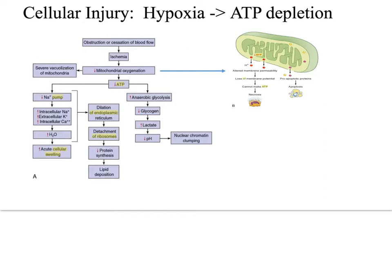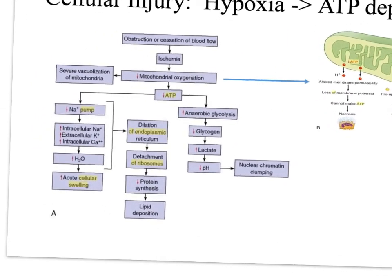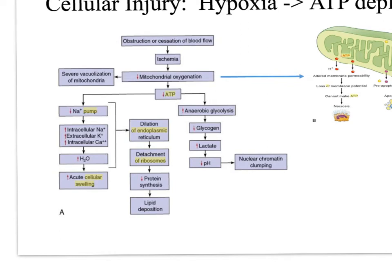Hypoxic injury is common, and the most common cause is ischemia. When ischemia occurs, there is a rapid decrease in mitochondrial phosphorylation, or oxygenation, which results in insufficient ATP production. When there's not enough ATP present to be used as a fuel source, the cells resort to anaerobic metabolism, also known as glycolysis. In glycolysis, glycogen is used as a fuel source to generate ATP, but it's pretty inefficient and produces byproducts of lactic acid, which accumulates in the cells, causing a decrease in pH and nuclear chromatin clumping.